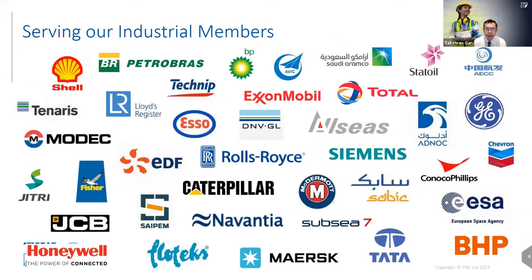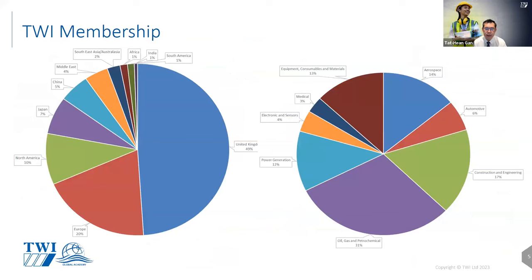Our members include large organisations such as Shell, Boeing, and Airbus. We cover a wide range of sectors — the majority of members are in the UK, followed by Europe, North America, and Japan. We used to be about 50 percent oil and gas focused, but due to market shifts and the energy transition, the dynamics have changed. We are now moving towards power generation, aerospace, construction, and other sectors.